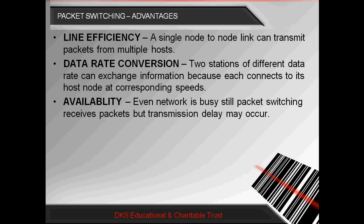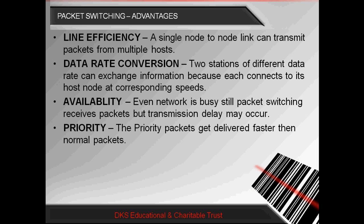Availability is a main advantage of Packet Switching. In Circuit Switching, once a call is established on a particular path, attempting to send data on that path gives only a busy tone. But in Packet Switching, even when the network is busy, it still receives the packet, though a transmission delay may occur — but the data will be transmitted without fail. The most important feature of Packet Switching is priority: priority packets get delivered faster than normal packets, which is not possible in Circuit Switching.